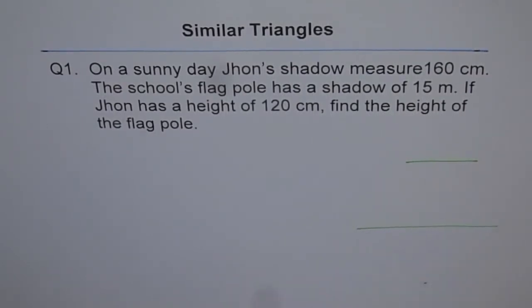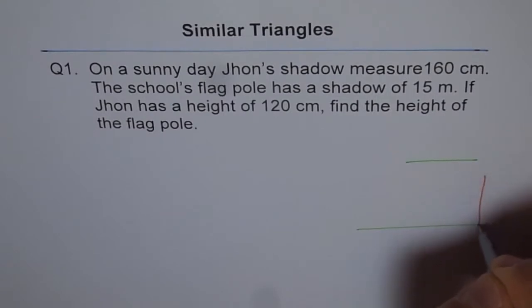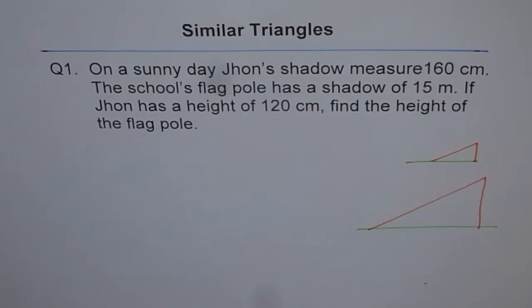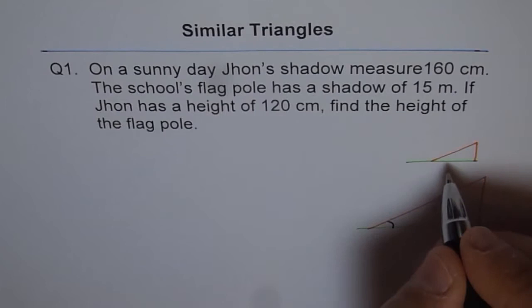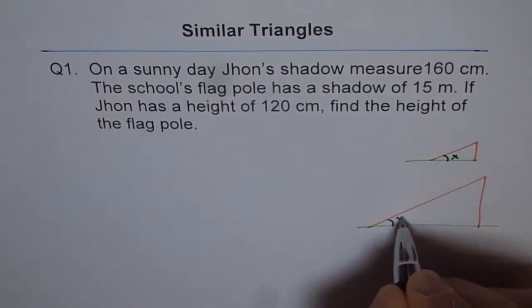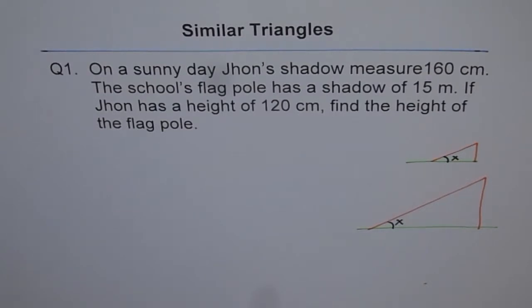Now these are my two diagrams. Now let us say that this is the school flag and the shadow is kind of like this. And here is John and the shadow is like this. And what is important here to understand is that this angle is same. We don't have to know the angle. Let it be X. But angle X is same for both John and for the flag.